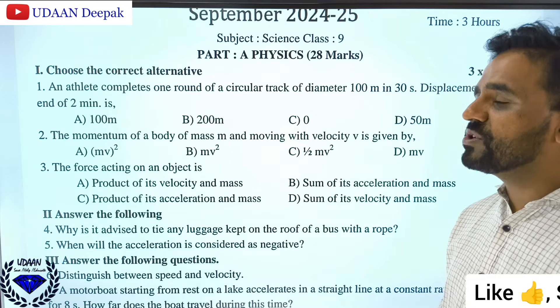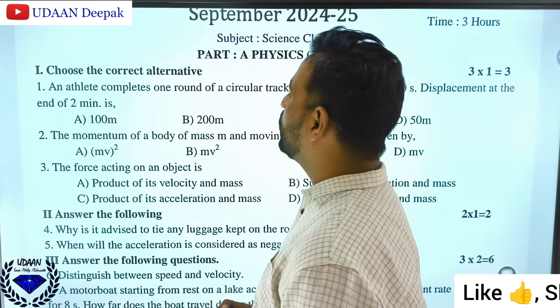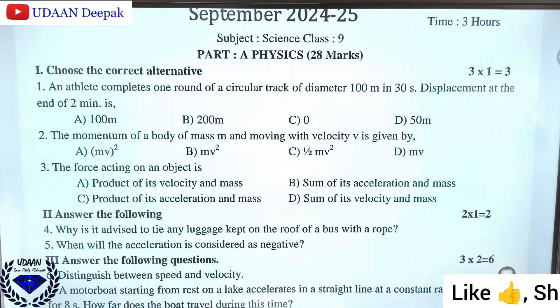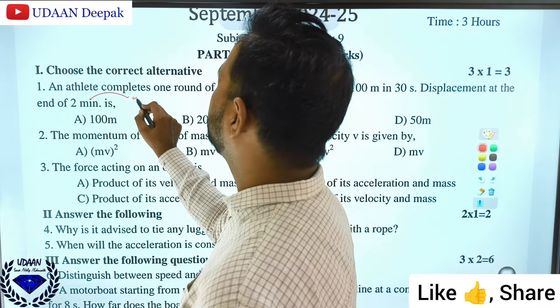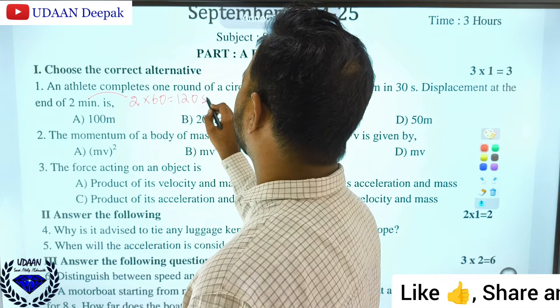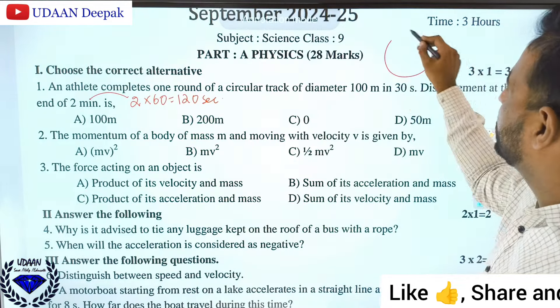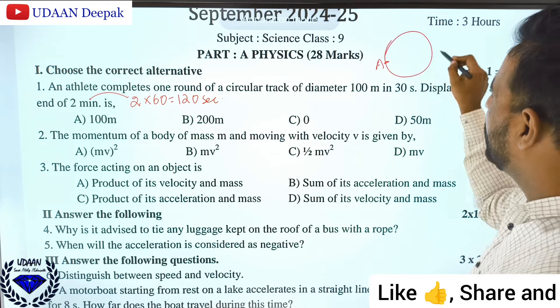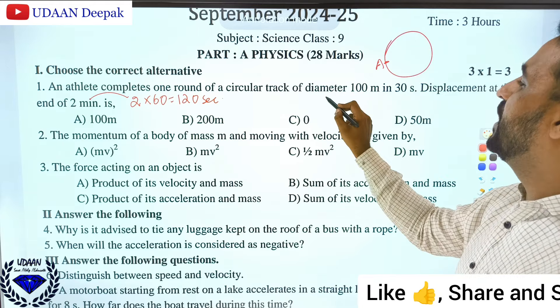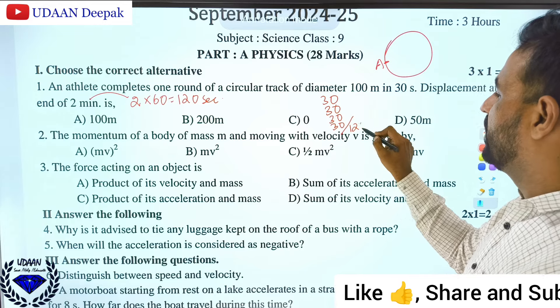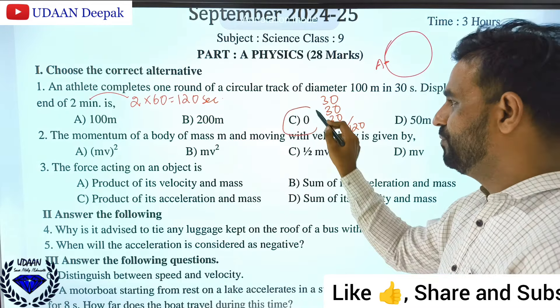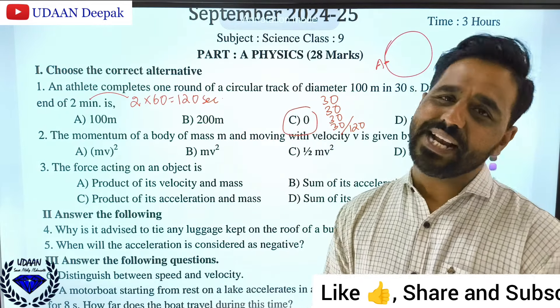An athlete completes one round of a circular track of diameter 100m in 30 seconds. The displacement at the end of two minutes is zero. In two minutes (120 seconds), you complete four rounds and reach the same starting point, so displacement is zero. The right answer is C.